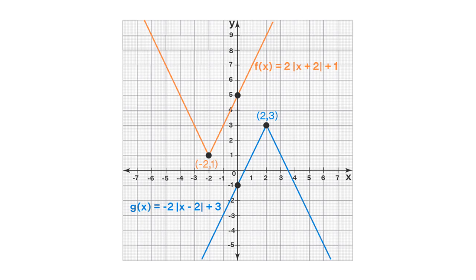Here we have an example of a modulus function. We have f of x equals 2 into mod of x plus 2, plus 1. When x equals 0: 0 plus 2 equals 2, then 2 into 2 equals 4, plus 1 equals 5. When x equals negative 2: 2 into 0 equals 0, plus 1 equals 1.